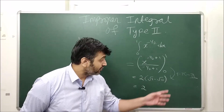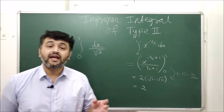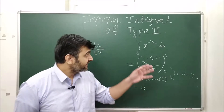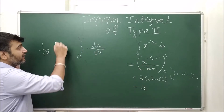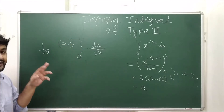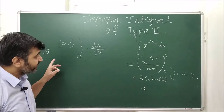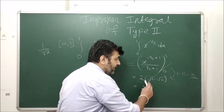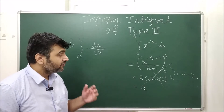But is that a valid reason? What does FTC2 say? It says your function has to be continuous on the closed and bounded domain. Is 1/√x continuous on [0,1]? The answer is no — 0 is the problematic point. Since the function is not continuous on the given domain, you cannot apply FTC2 over the interval 0 to 1.